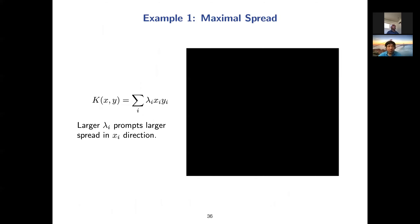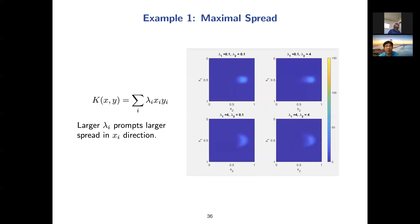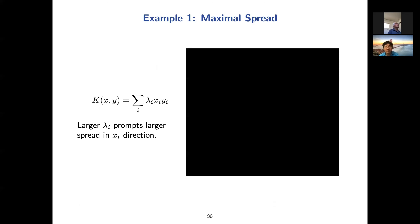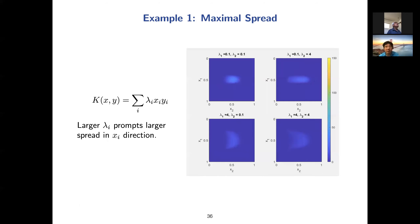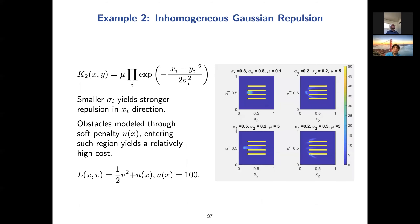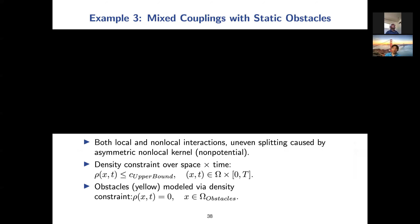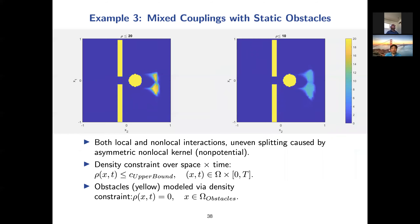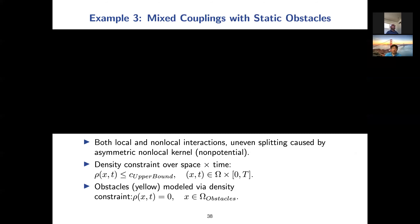For maximal spread: k of x and y looks like this, giving larger spread in the x1 direction — these guys move this way and get where they're supposed to go but spread out. For repulsion: you get stronger repulsion in the x1 direction and these guys can sneak through regions with something blocking them. With mixed couplings and static obstacles, the density moves through the hole and around obstacles, with a density constraint that rho equals zero at the obstacles.